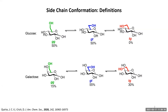The ratio of these conformations observed in solution is impacted primarily by the stereochemistry of C4. When you have an equatorial OH at C4, as in the case for glucose or for deoxysugars, you see about 50% GG and 50% GT. When you have an axial OH at the four position, this ratio shifts such that you see about 15% GG — because that conformation is now destabilized — 55% GT, and 30% TG.